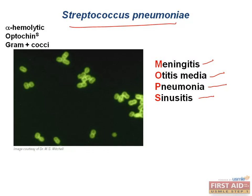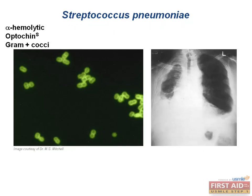For pneumonia caused by Strep pneumoniae, if you see fever and a cough productive of rusty-colored sputum, you might want to get a chest X-ray. Pneumonia will show a lobar consolidation on chest X-ray, and this is key to diagnosis. Consolidation patterns are discussed more thoroughly in the pulmonology section.